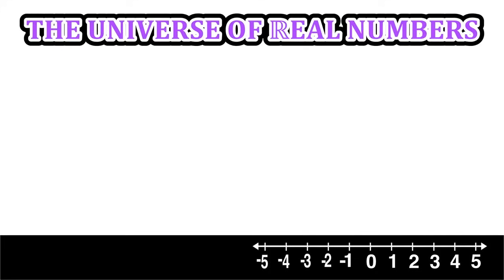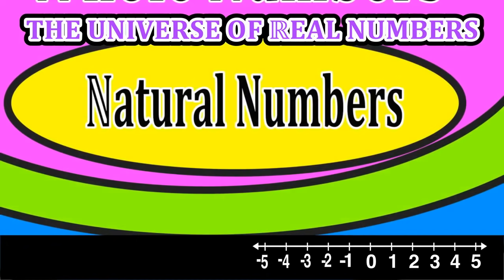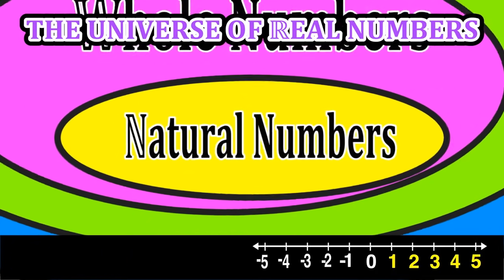All right everyone, let's go ahead and take a visual journey through the universe of real numbers. So the first set of numbers is called the natural numbers, also called the counting numbers. Think of it like counting on your fingers. This set starts with 1, then 2, then 3, then 4, and so on and so forth, on and on in a positive direction.